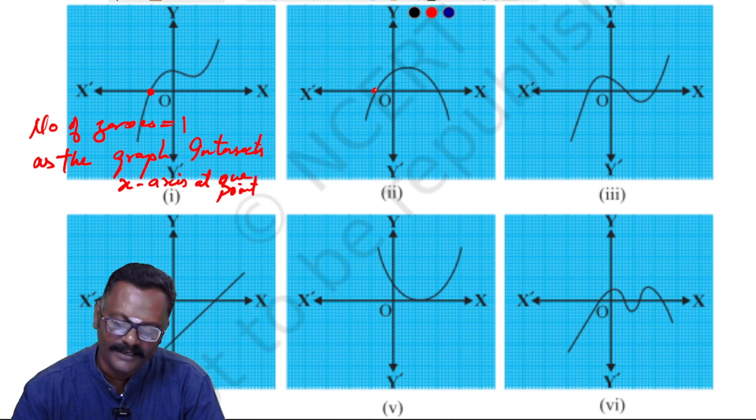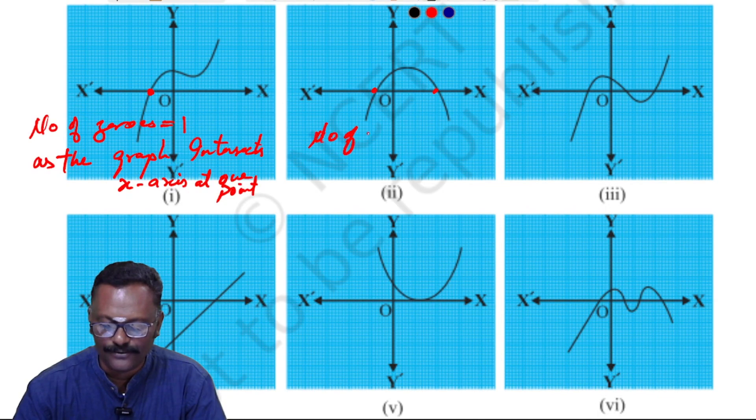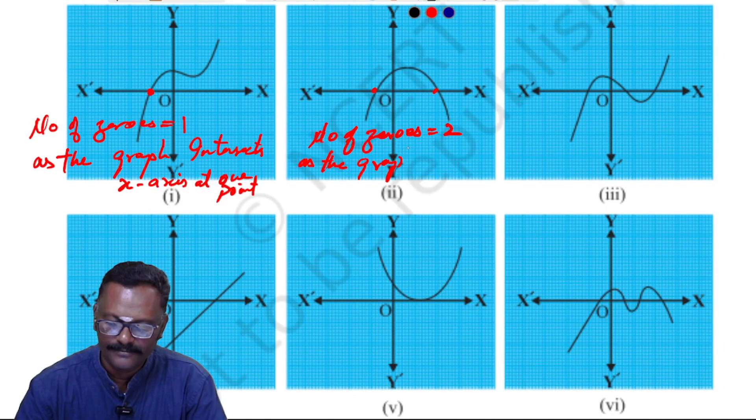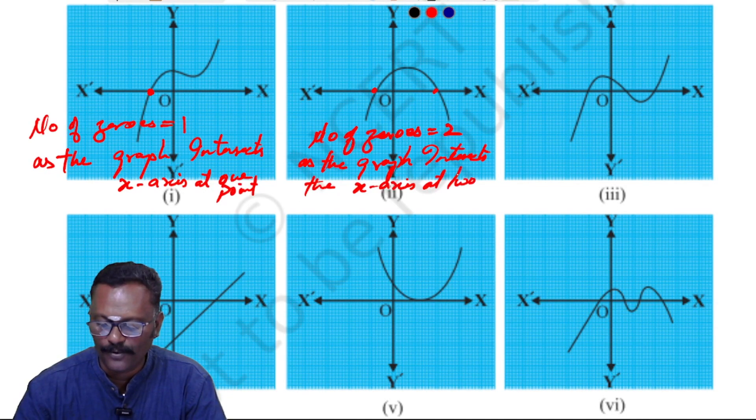Now the second one. The number of zeros is 2, as the graph intersects the x-axis at two points.